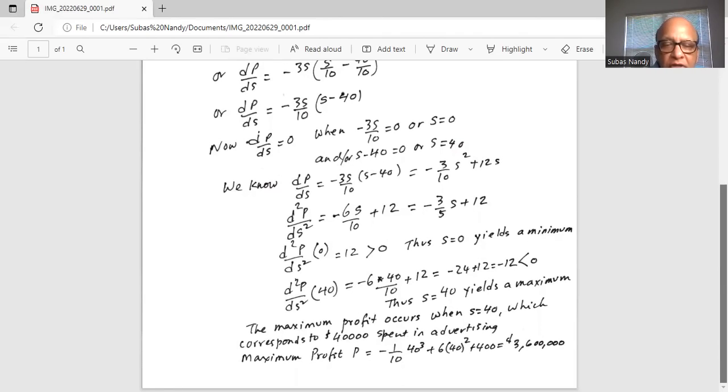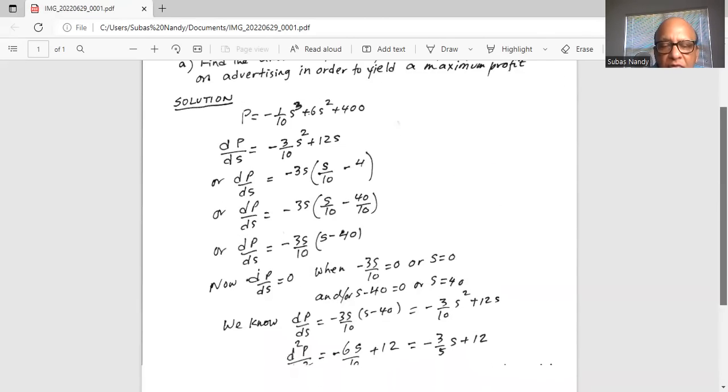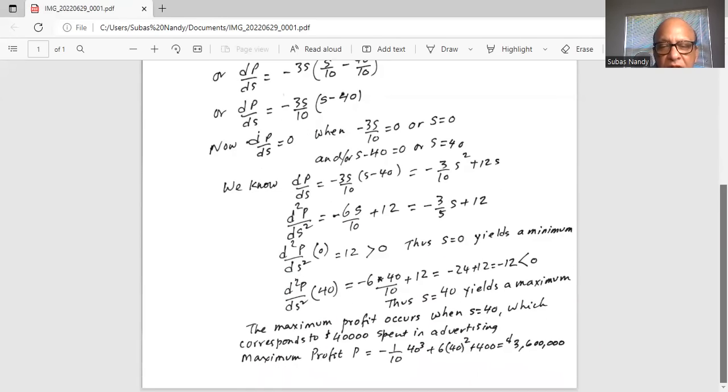So the maximum profit occurs when s is equal to 40, which corresponds to $40,000 spent in advertising, and the maximum profit p is equal to minus 1 over 10 times 40 cubed plus 6 times 40 squared plus 400, and that works out to $3,600,000.